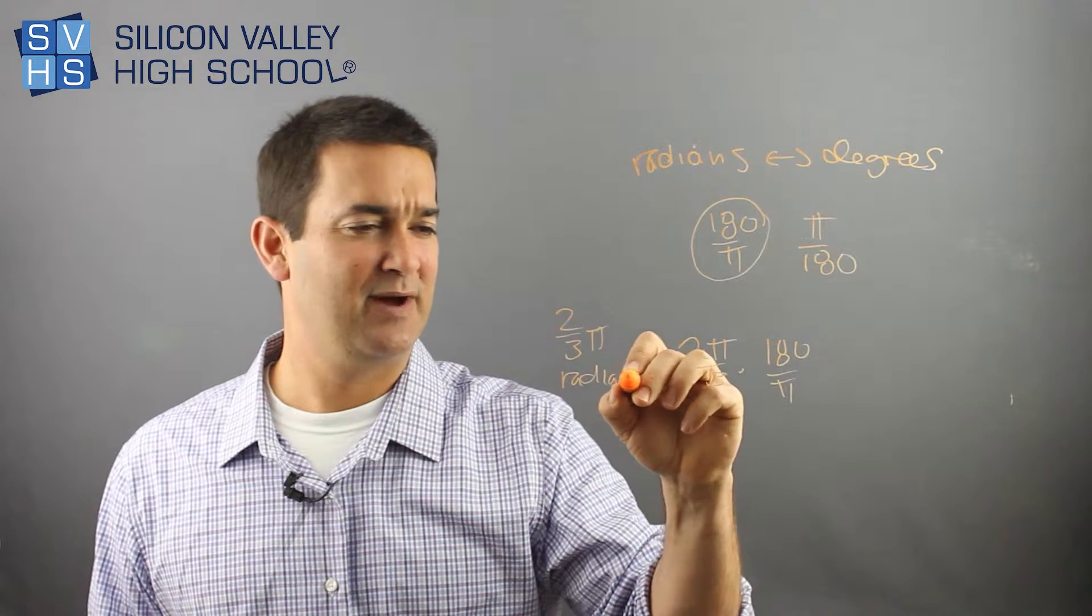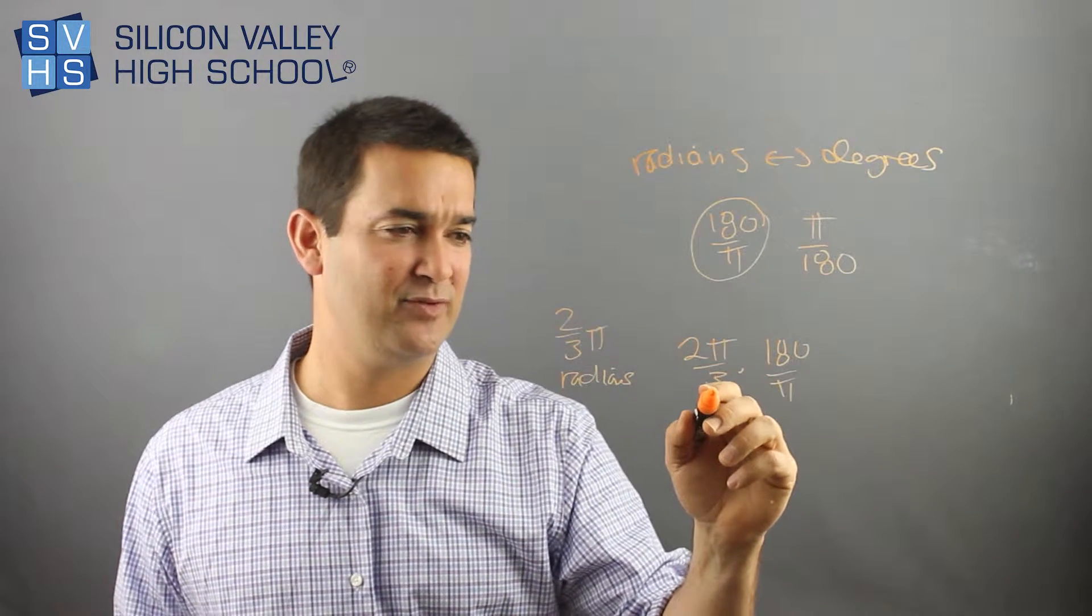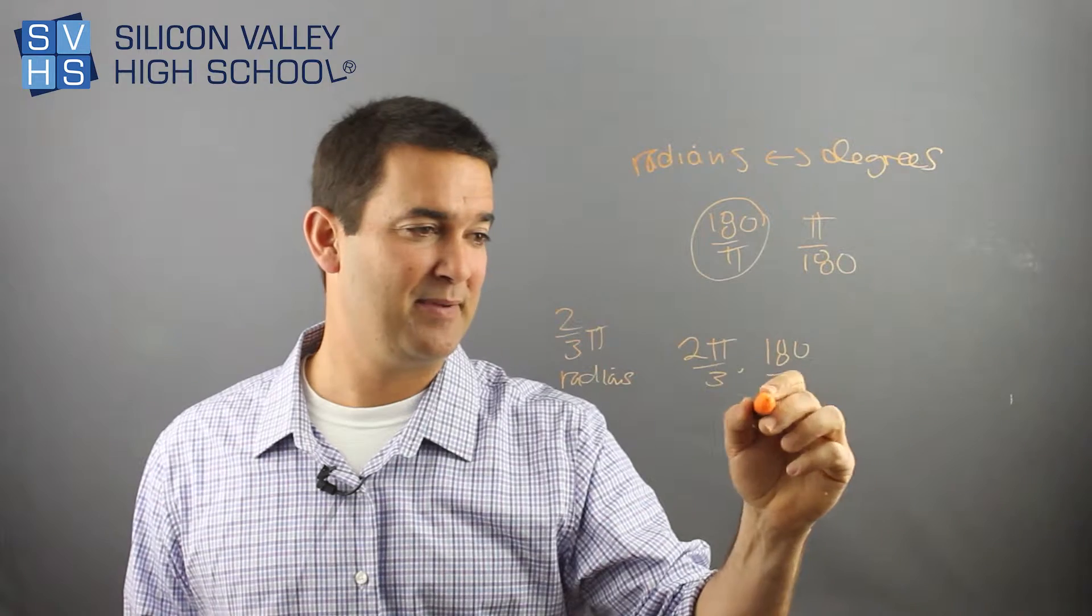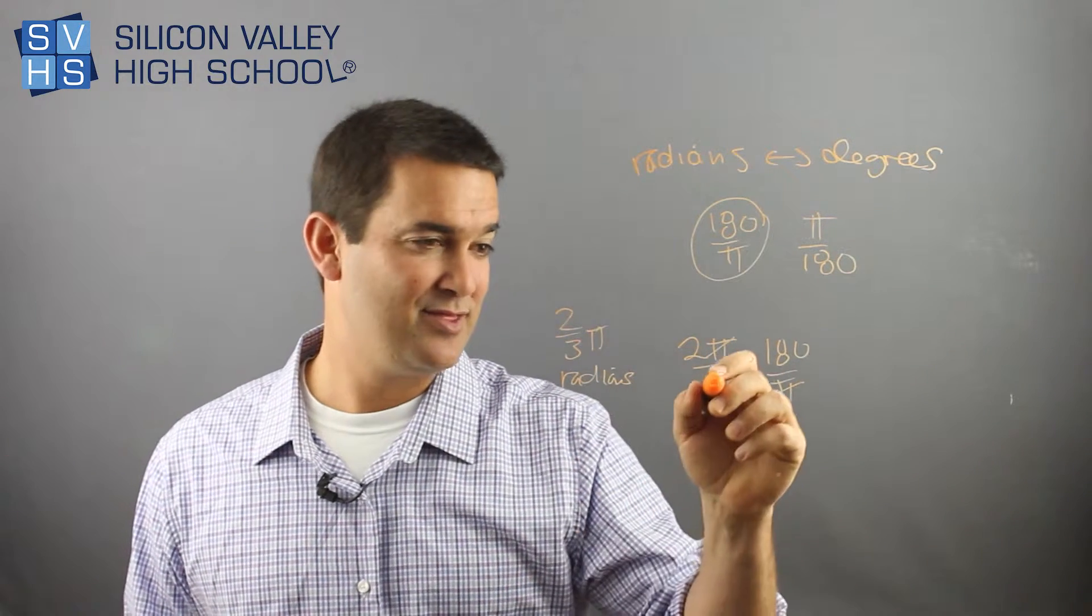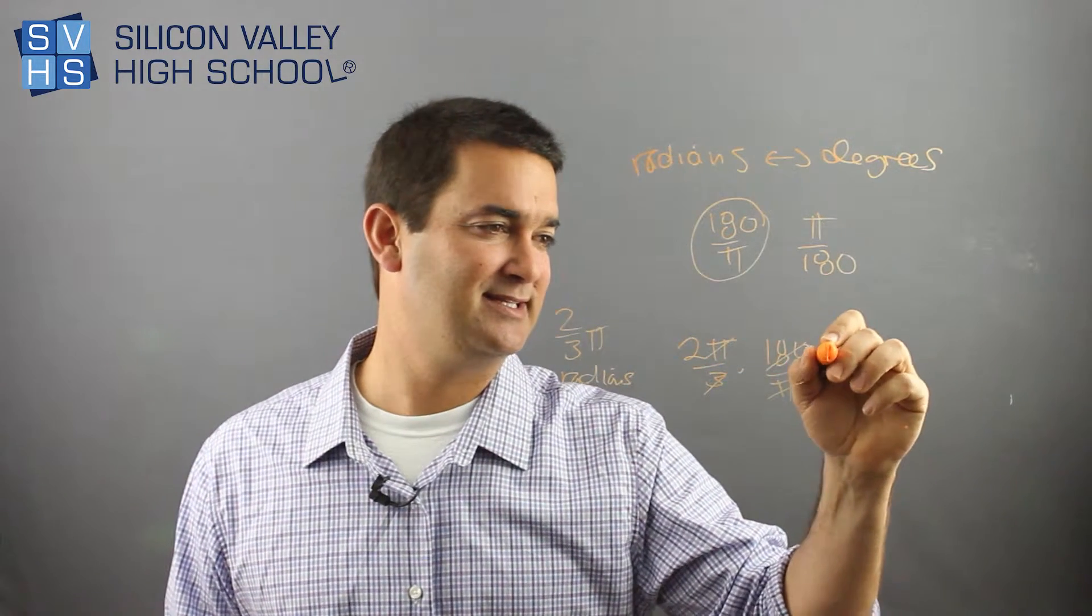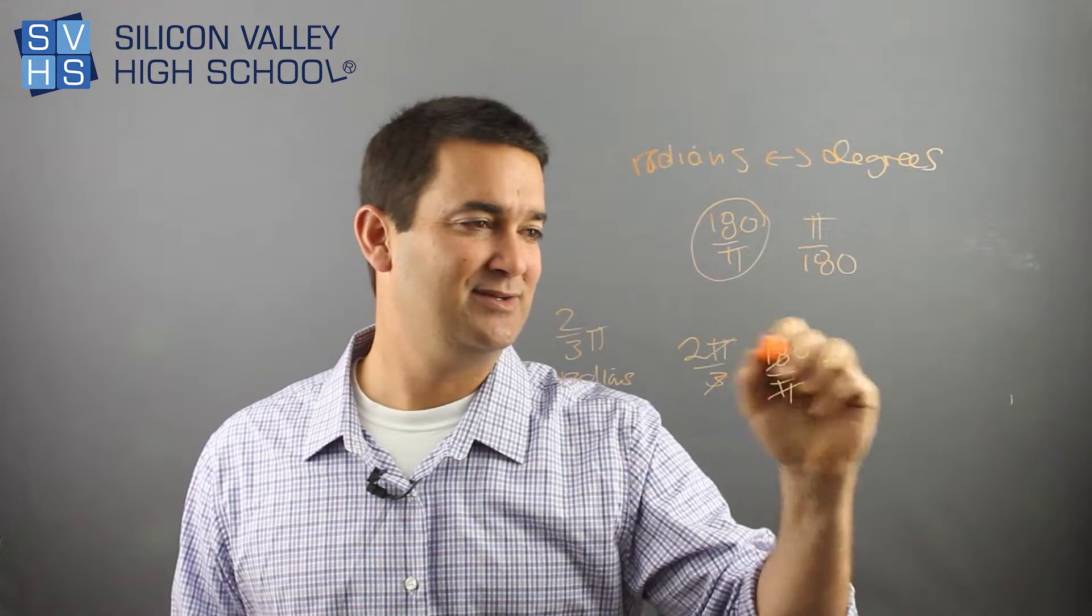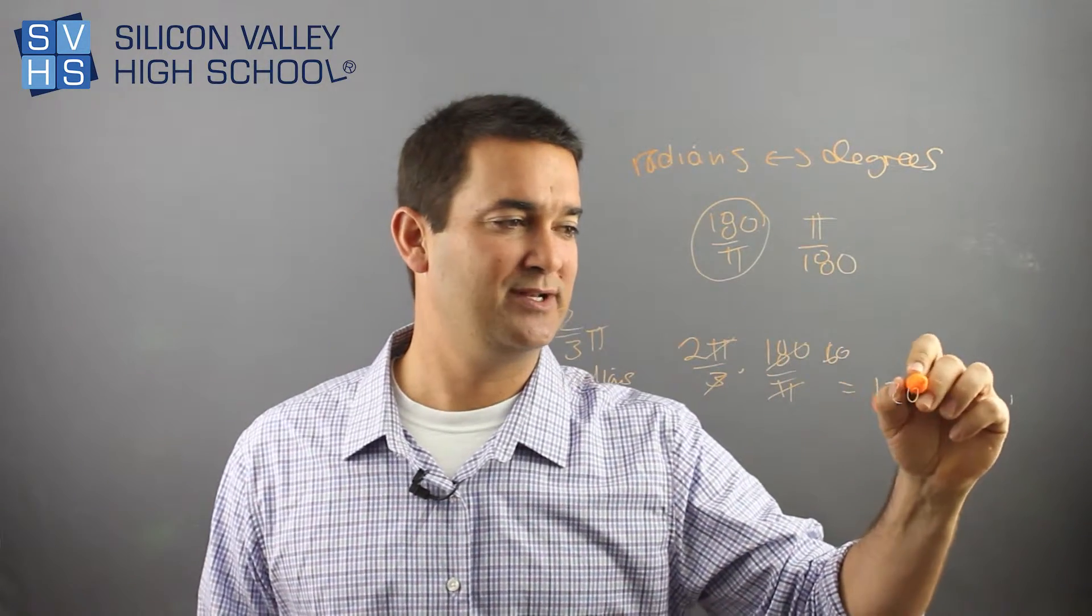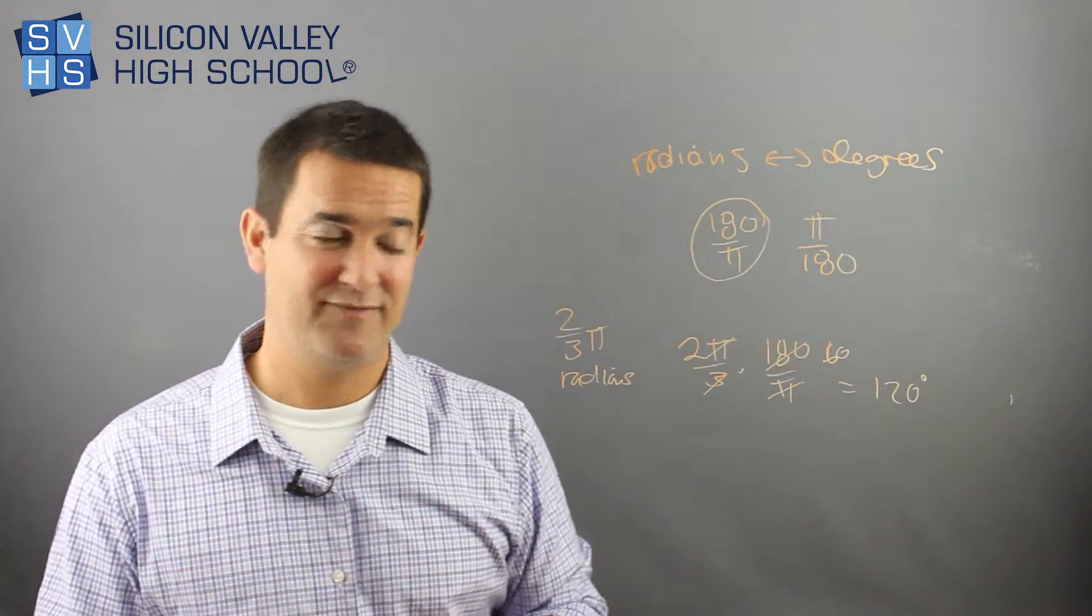So you have your 2 thirds pi radians. 2 pi over 3 times 180 over pi. My pi's cancel, which is a miracle. 3 actually goes into 180 60 times. So this is 2 times 60, which is 120 degrees. Perfect.